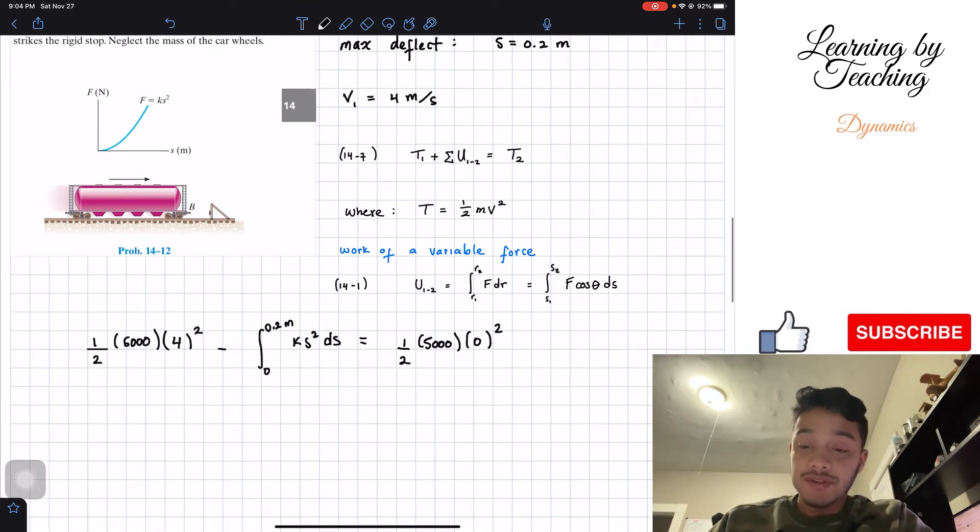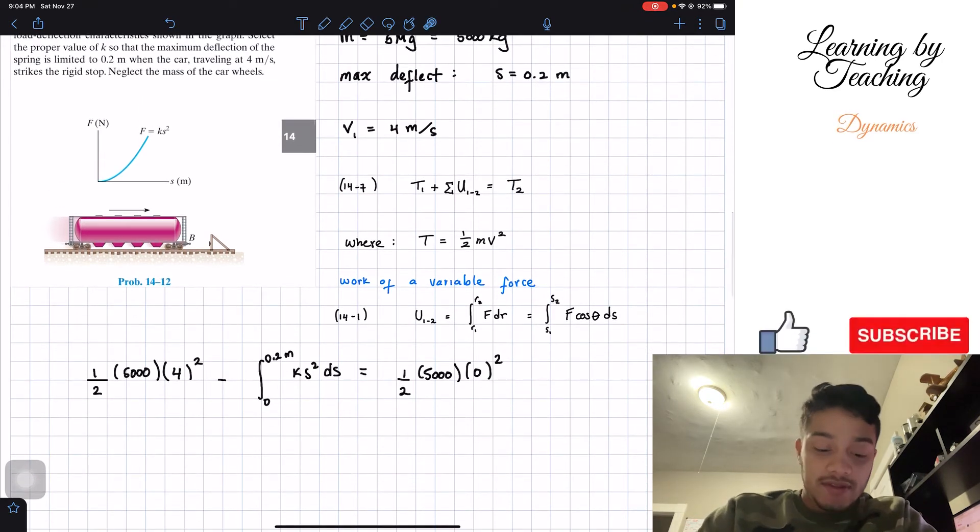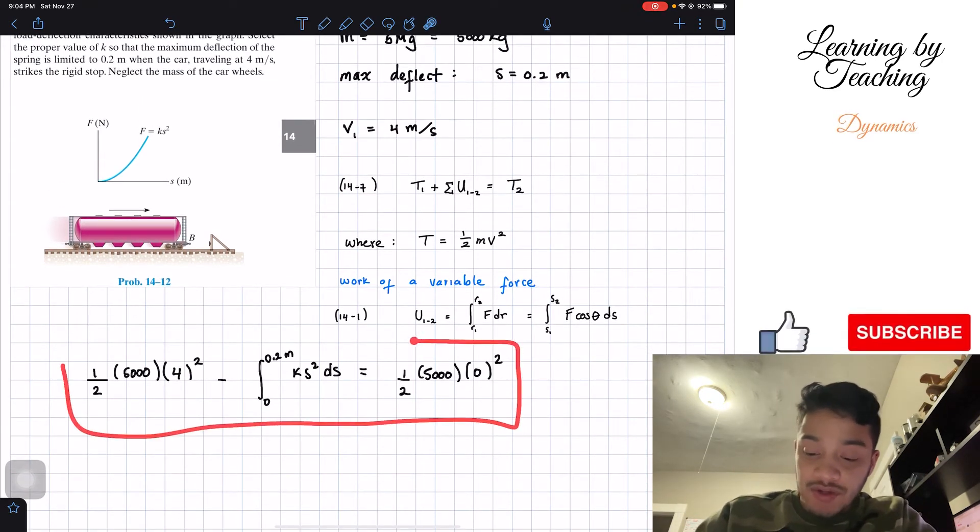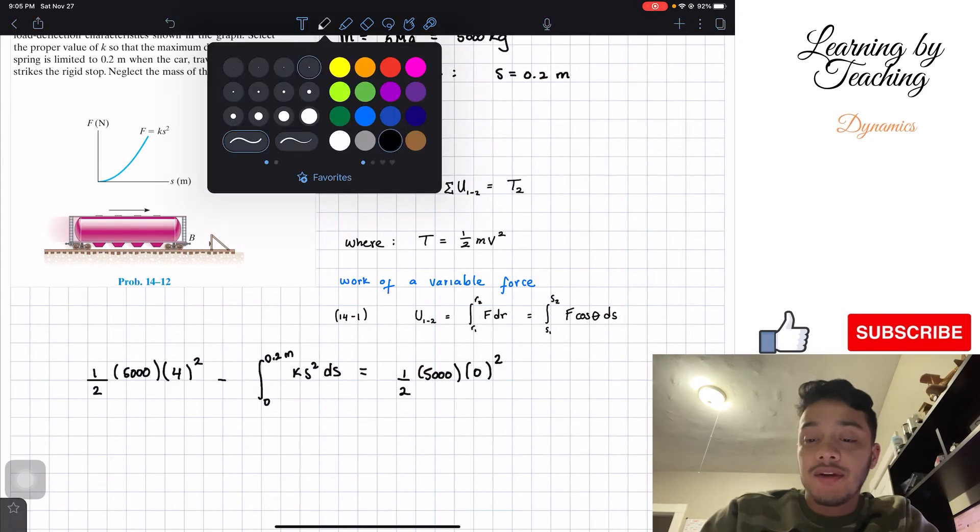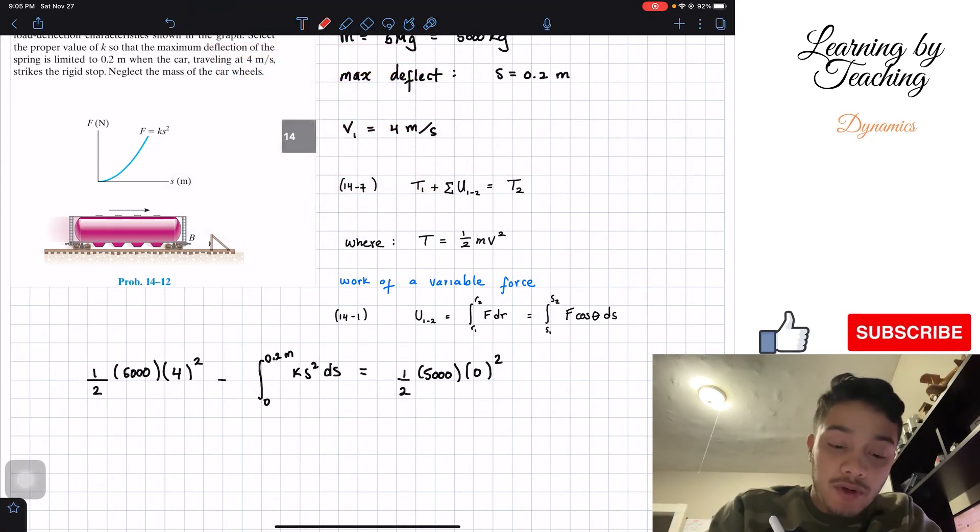So this is our energy work balance equation. Now why do we have a minus? And the reason for this minus is that we're traveling at this velocity traveling to the right.